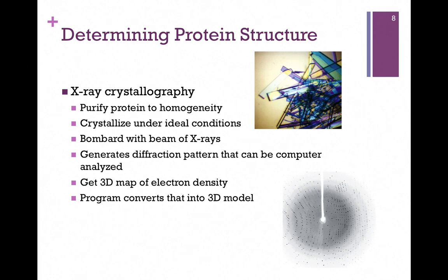Imagine we've determined our primary structure. Now we want to determine the secondary, tertiary, and quaternary structure. That's X-ray crystallography. We're going to purify a protein to almost 100%, and we're going to crystallize it under ideal conditions. At the top of the screen here, we have pictured crystals of a particular protein. Now we bombard those crystals with a beam of X-rays, and because we have a regular array of atoms within that crystal, those X-rays will diffract and produce a very specific pattern.